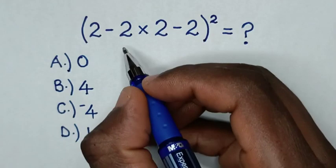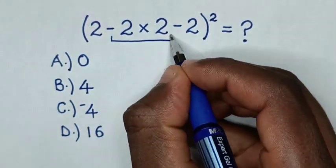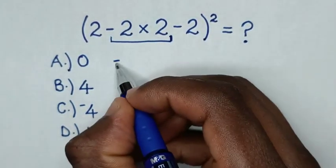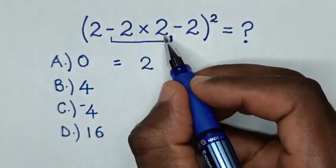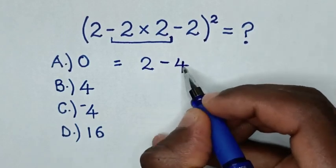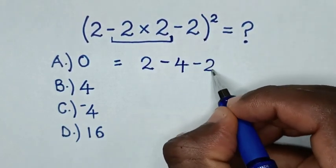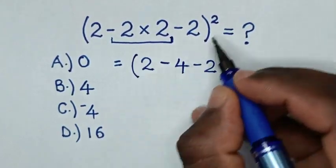So first we'll start to deal with this multiplication inside the bracket. Then it will be equal to 2, then negative 2 times 2 is negative 4, then minus 2, bracket, power of 2.